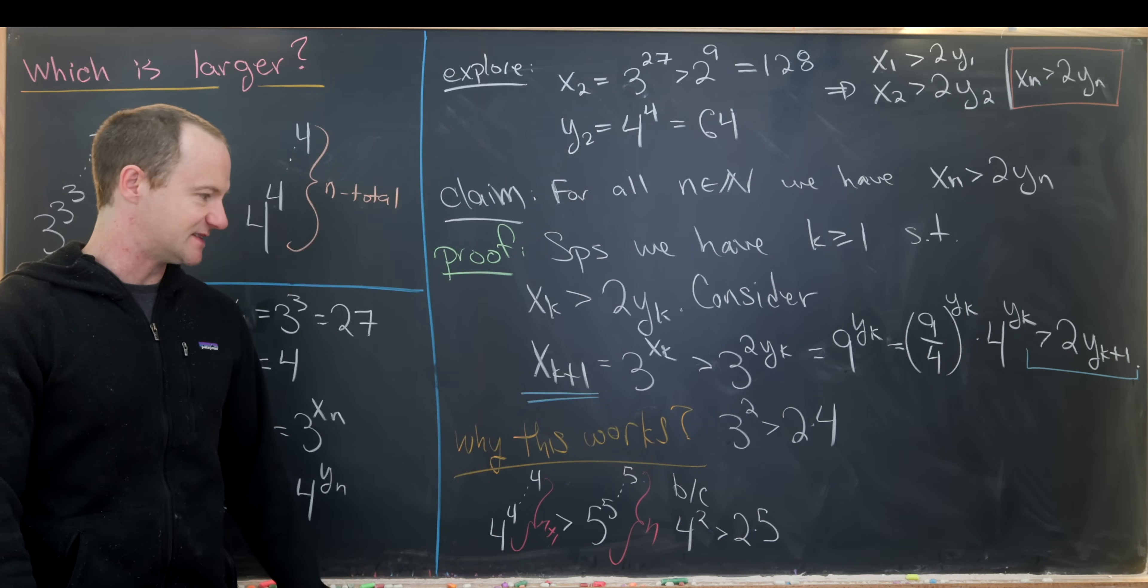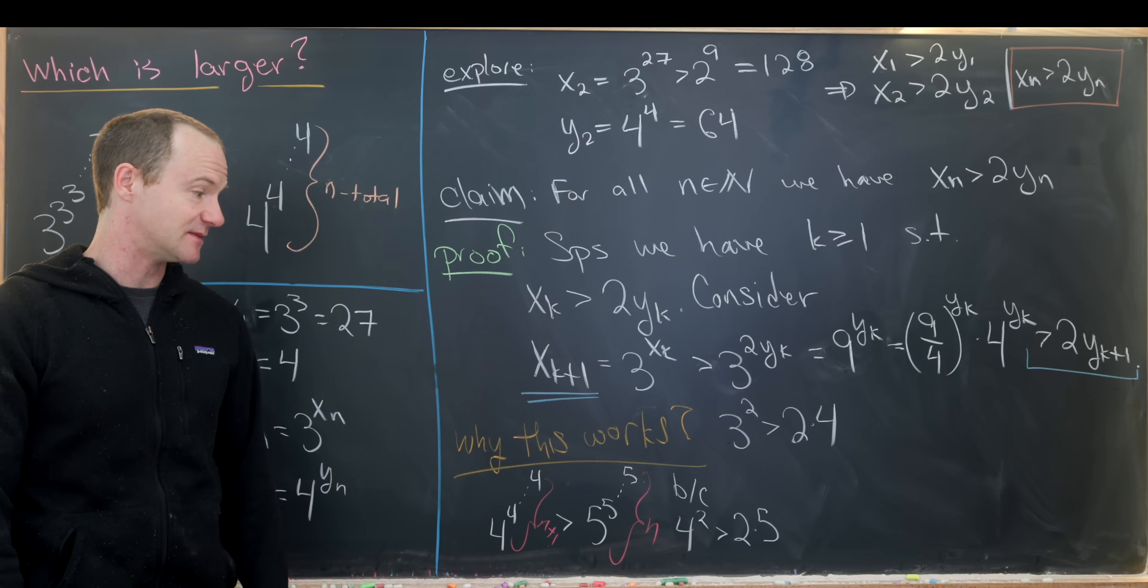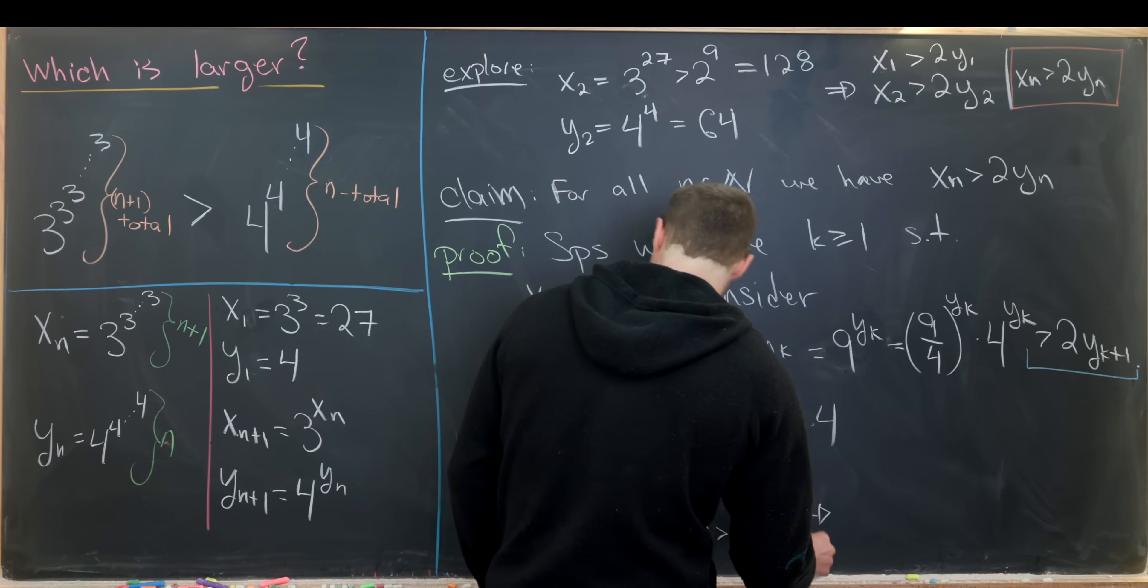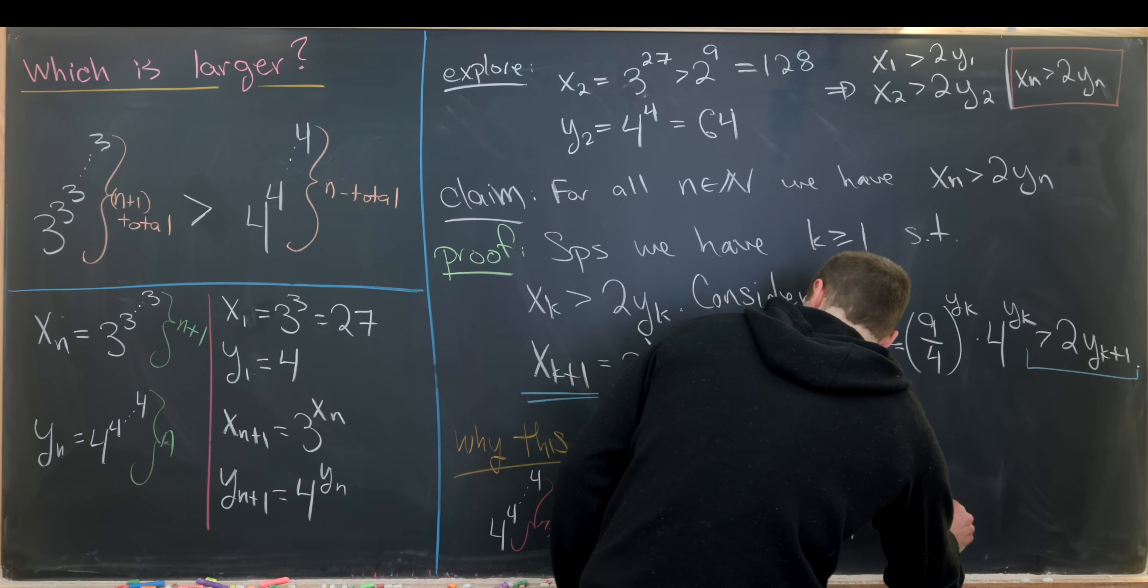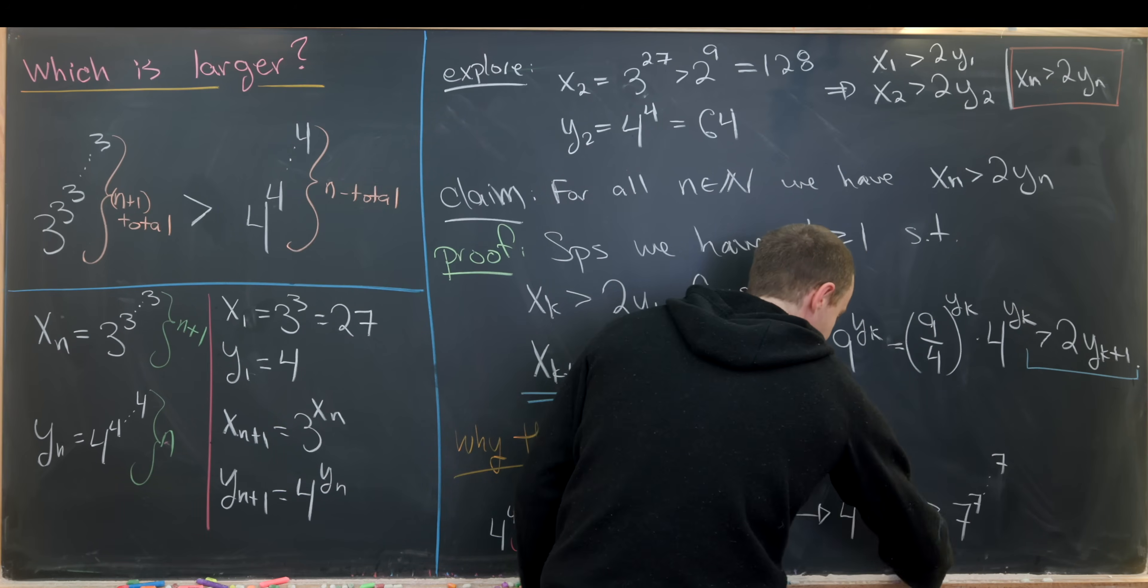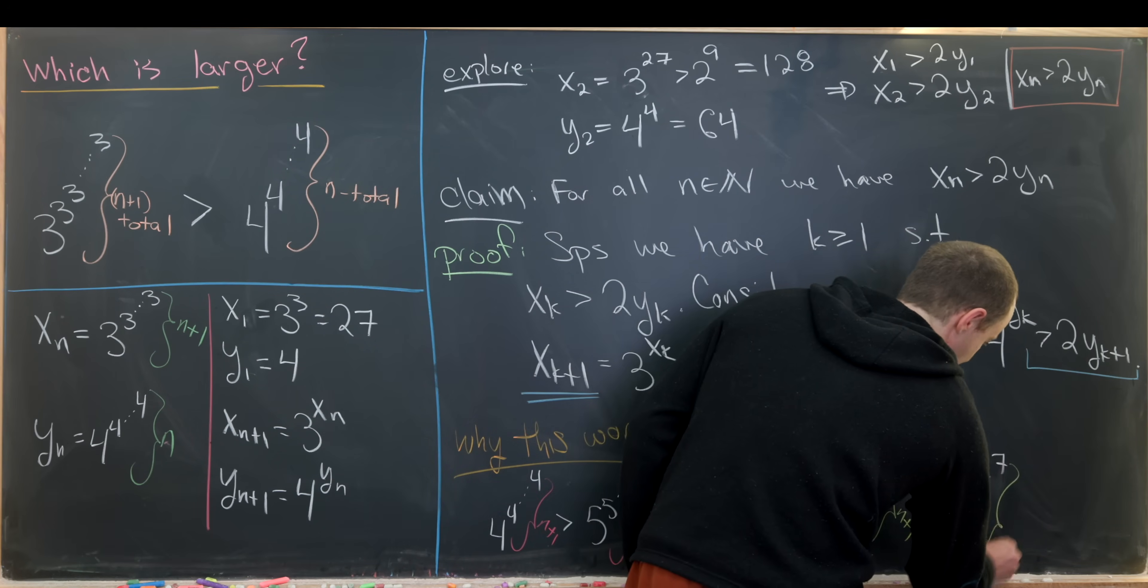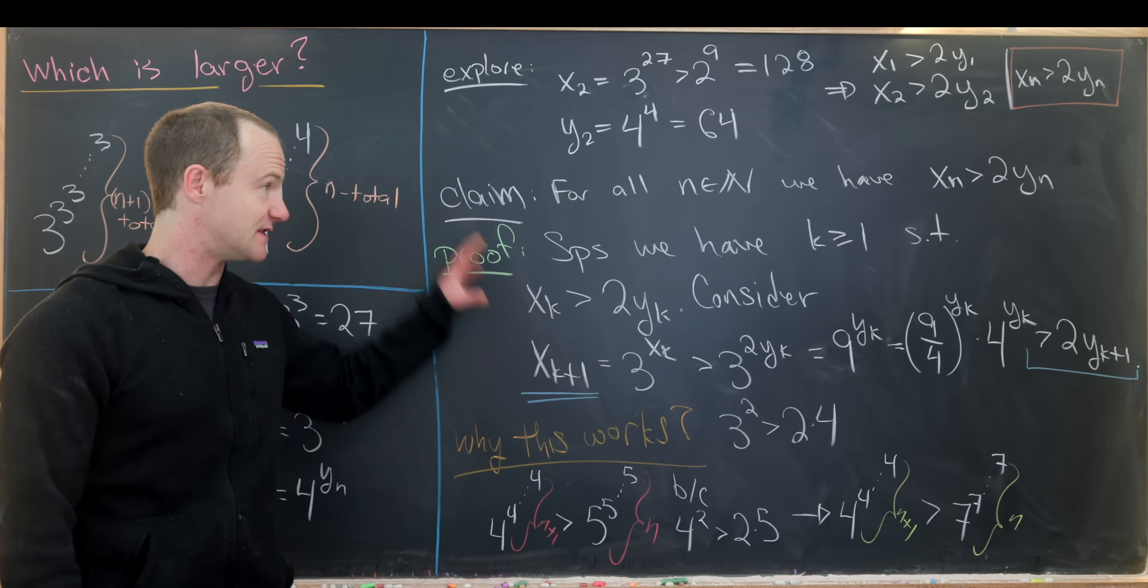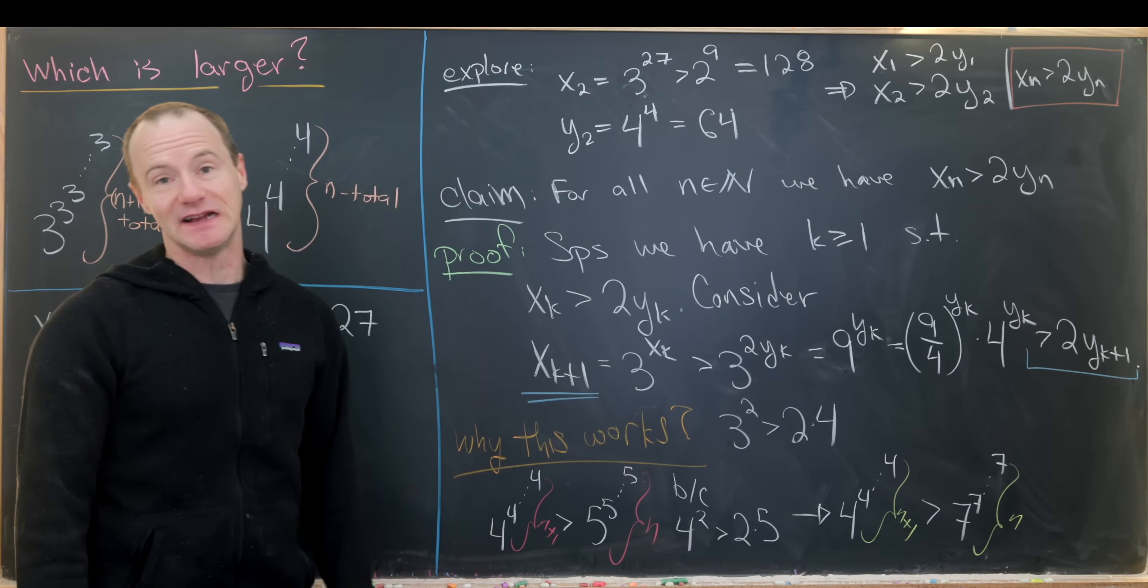But notice 4 squared is 16, and 16 is not just bigger than 2 times 5, it's bigger than 2 times 6 and 2 times 7. So this can actually be extended here to show that 4 to the 4 all the way up is bigger than 7 to the 7 all the way up, where we have n plus 1 guys here and n guys here. So we should be able to adapt this solution strategy to prove this identity.